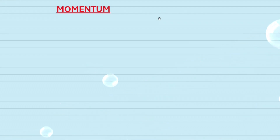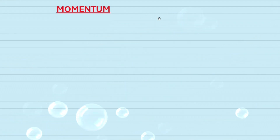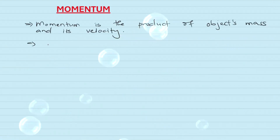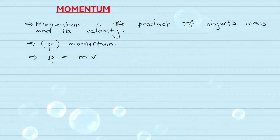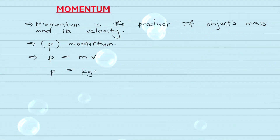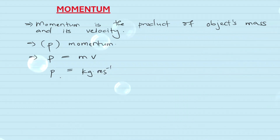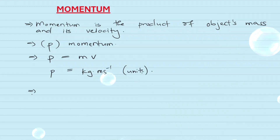In this video we are doing momentum. Momentum is the product of an object's mass and its velocity. It is represented by a small letter p: p is equal to mass times velocity. The units can be derived from the formula — the units for mass is kg and for velocity is meters per second, so the units for momentum is kg·m/s.